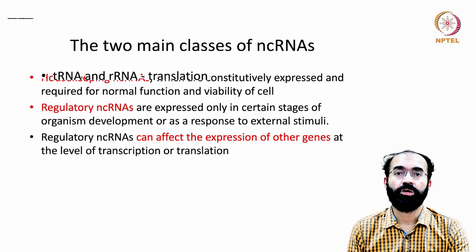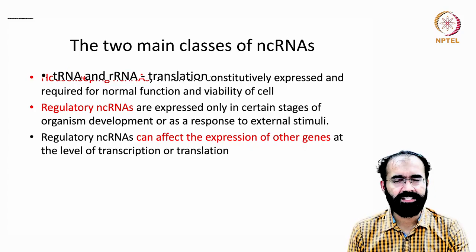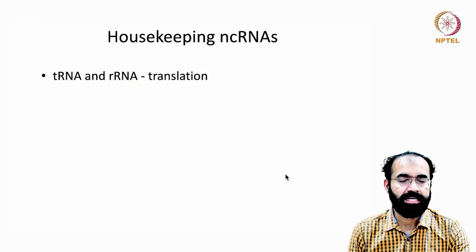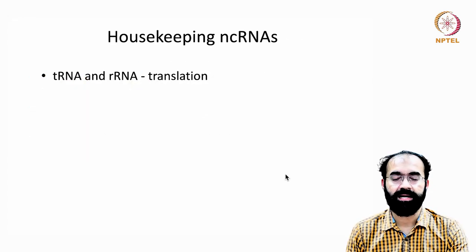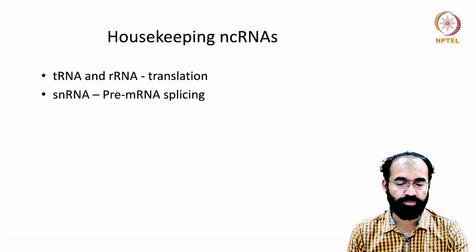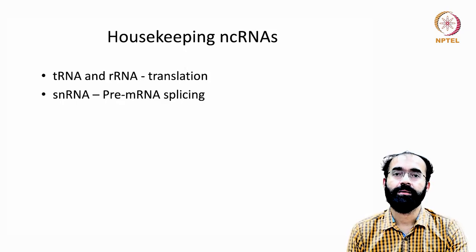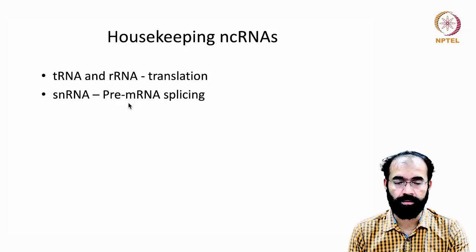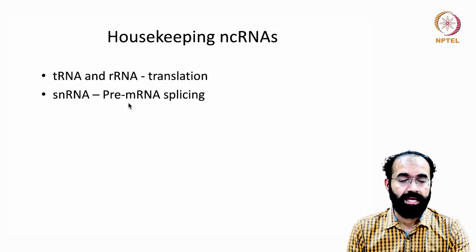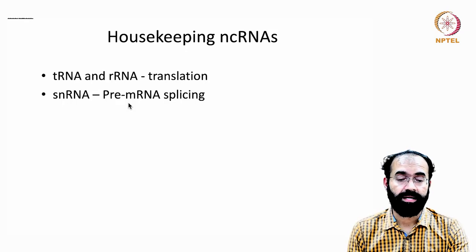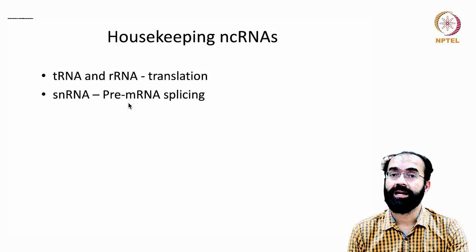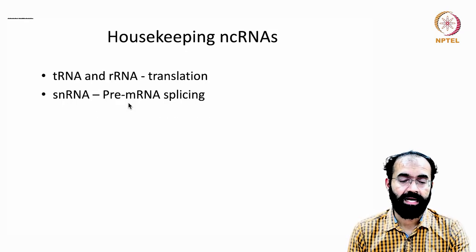Let us see housekeeping non-coding RNAs, which are rather simple because by now we all know what tRNA and ribosomal RNA are — useful in translation and protein production in a cell. snRNA is important, and snoRNA (small nucleolar RNA) is meant for ribosomal RNA modifications.